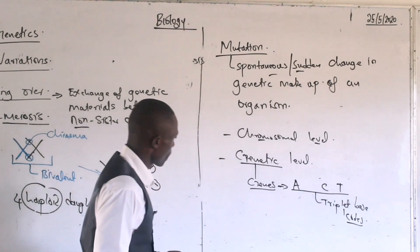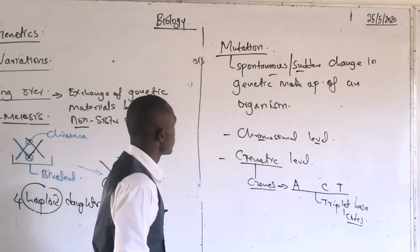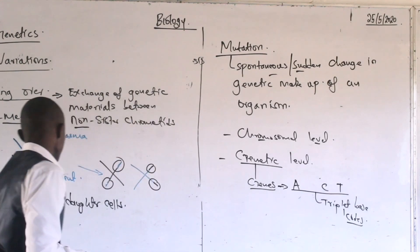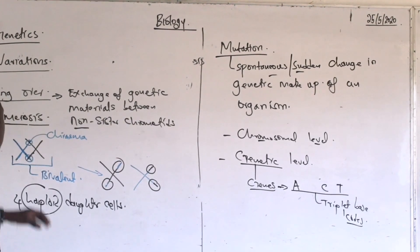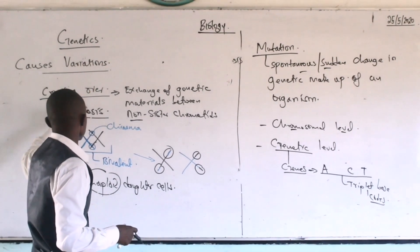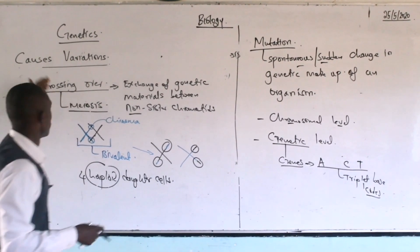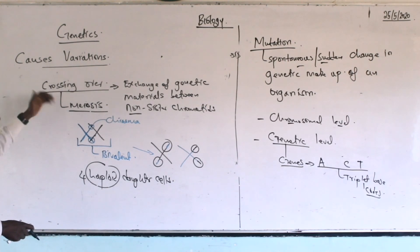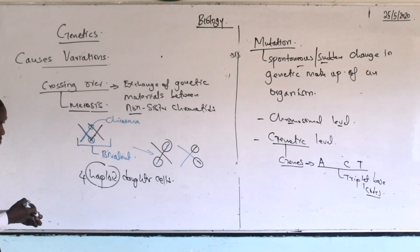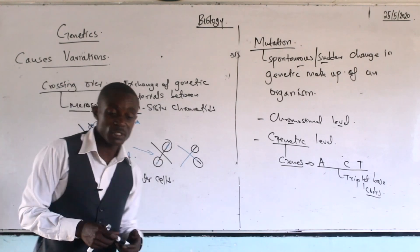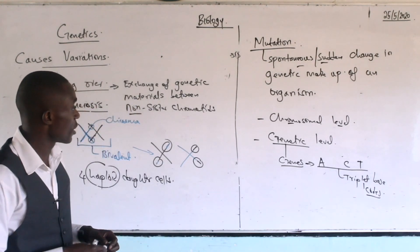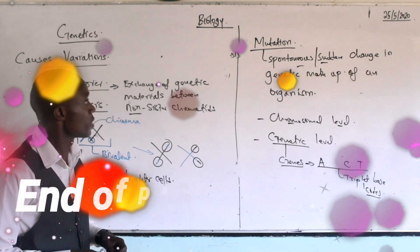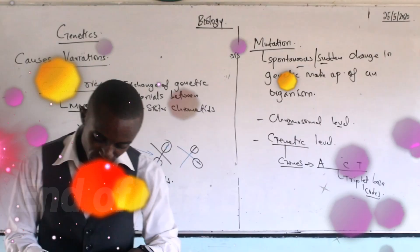To summarize, variation is caused by mutation and by reproduction — specifically through crossing over and independent assortment. We will cover more about mutation in the next subtopics. Feel free to send feedback to the email shared in part one. Thank you.